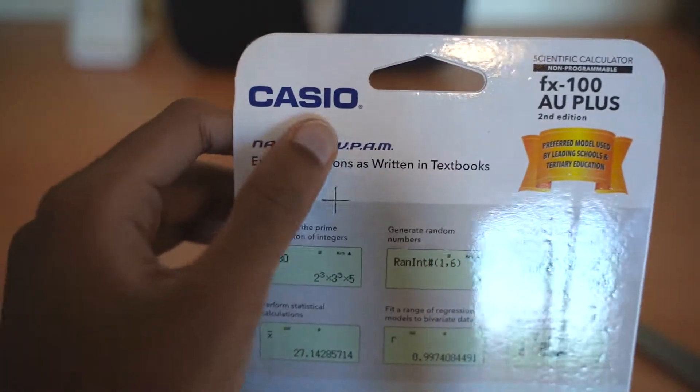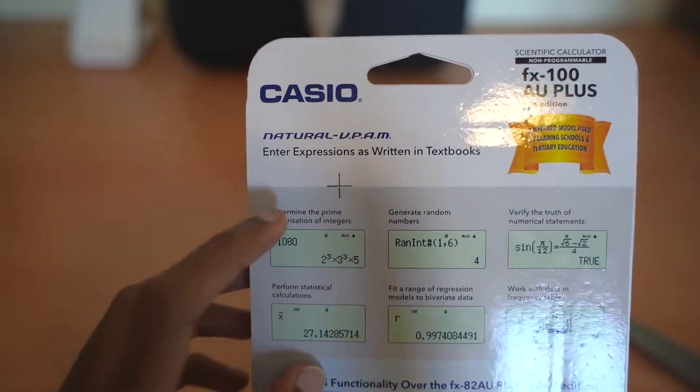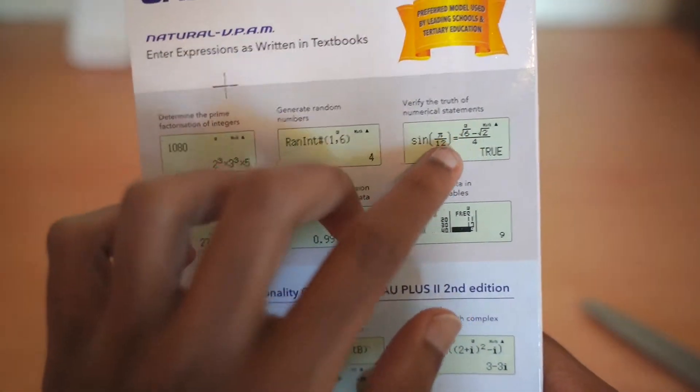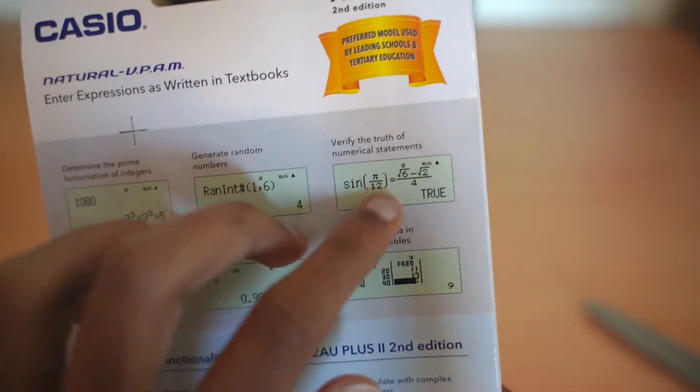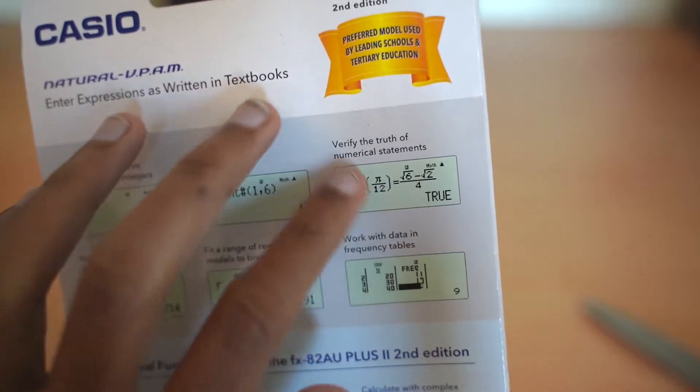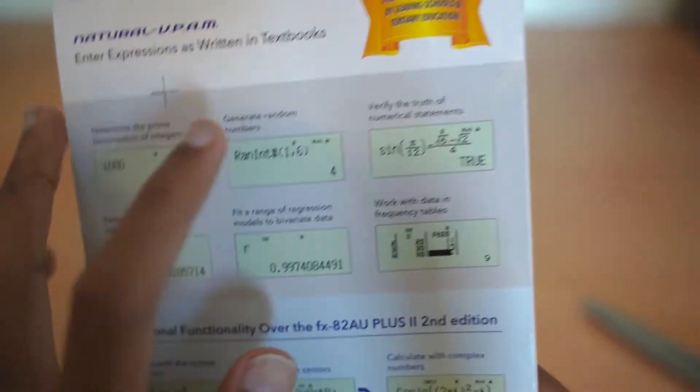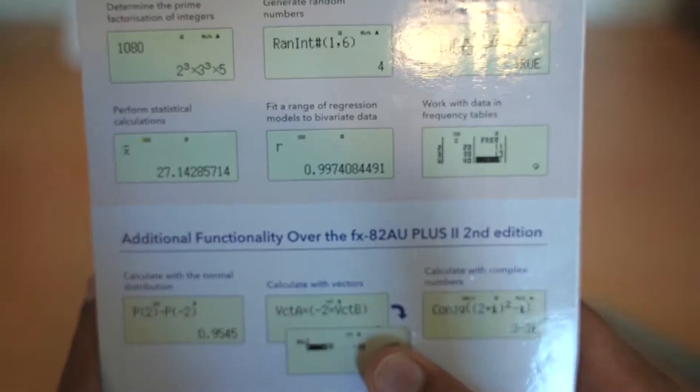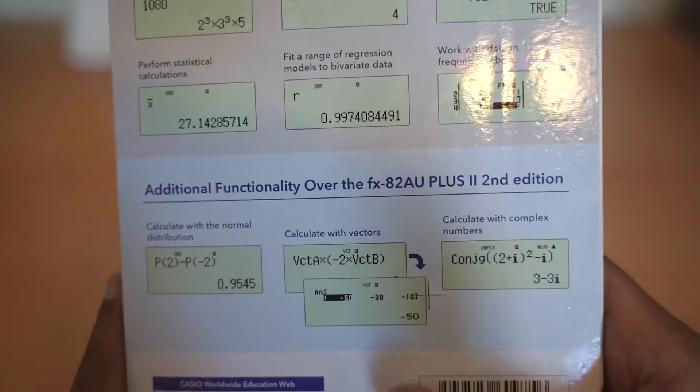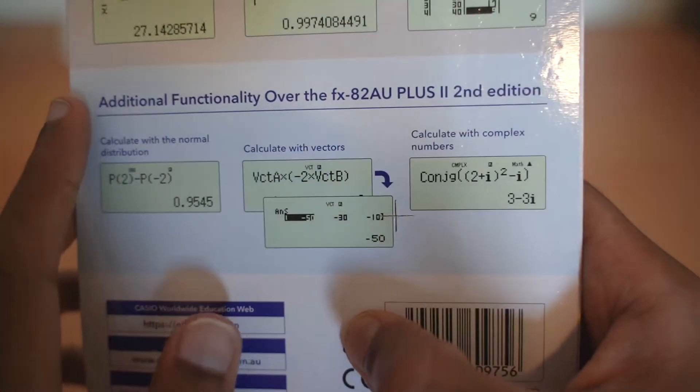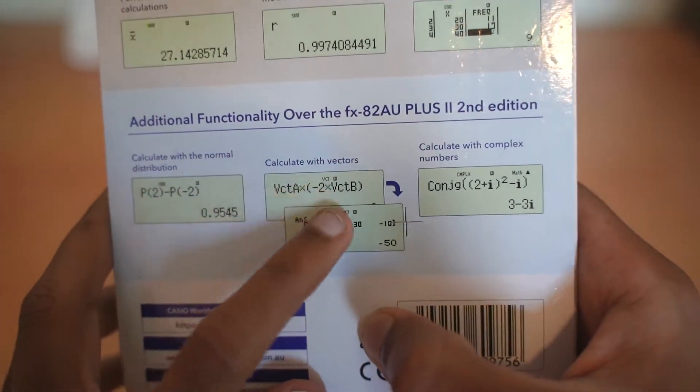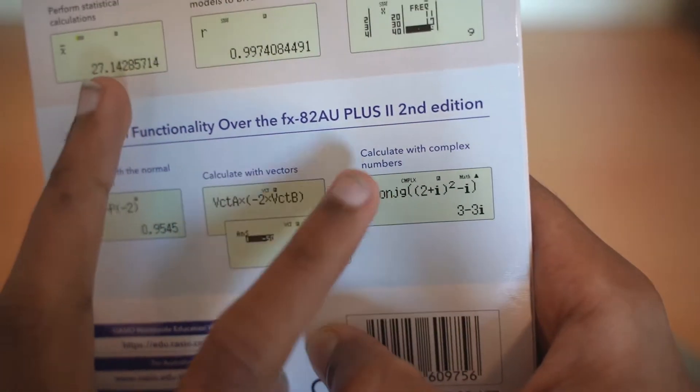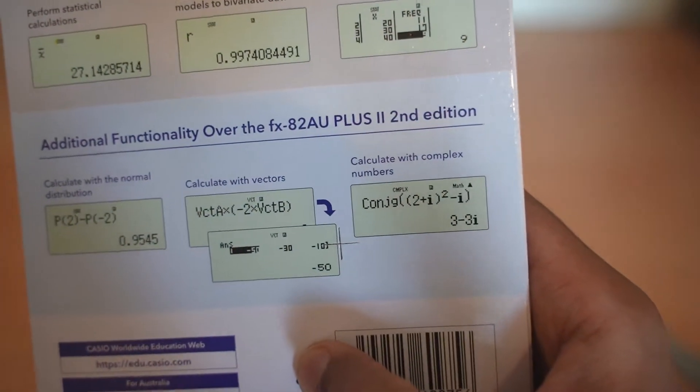In the back side there is the natural textbook display. There are fractions in the textbook and also the square root functions. You can see the probabilities, the vector calculations as well as the conjugates. So actually the complex numbers.